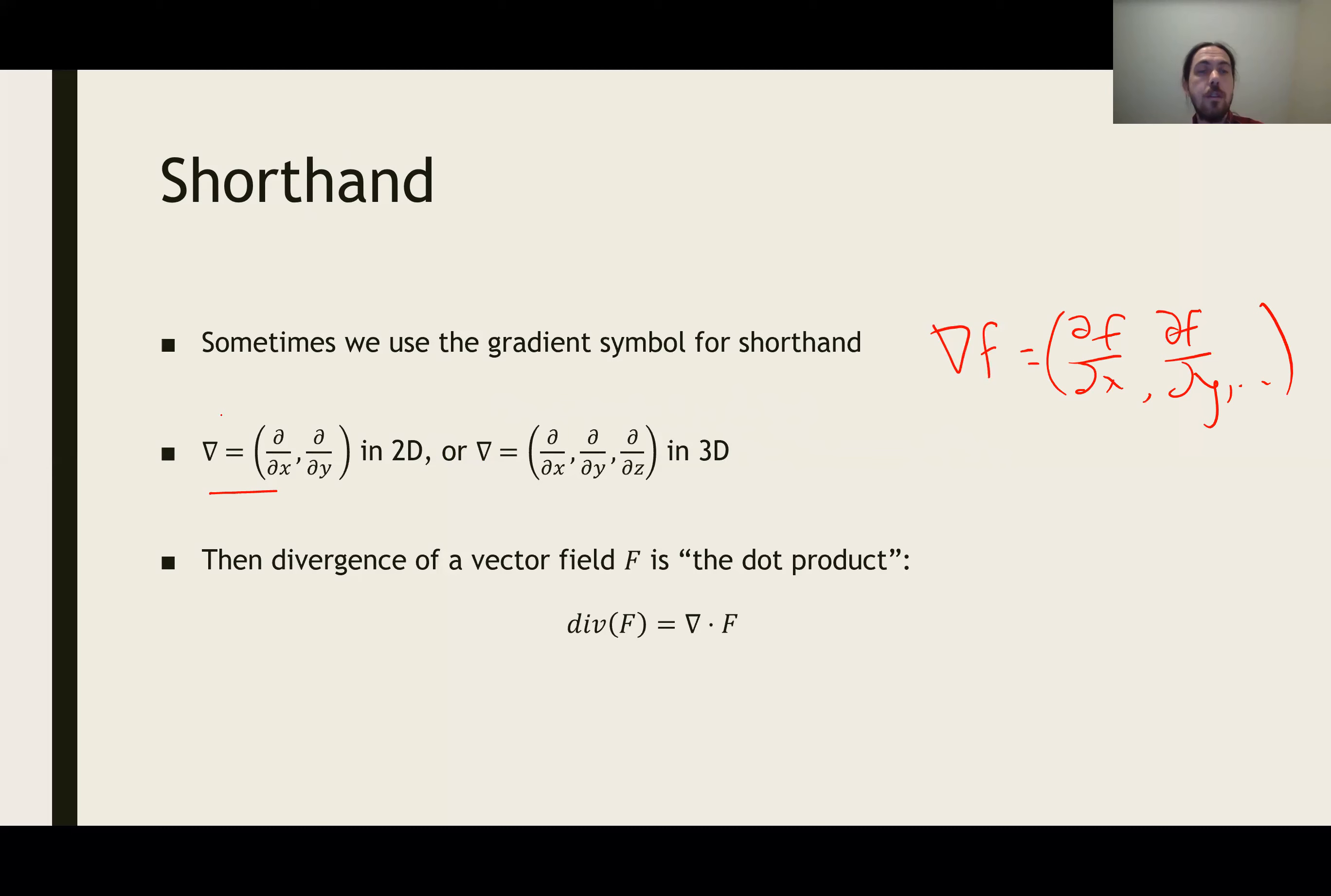If we write the symbol del as a vector that has the partial derivatives as components, then a shorthand way to remember divergence of a vector field is grad dot that vector field.